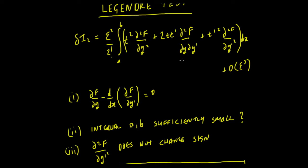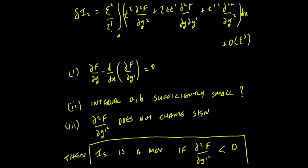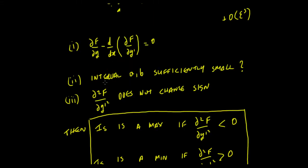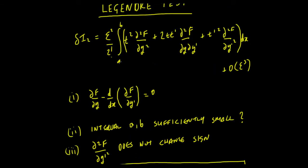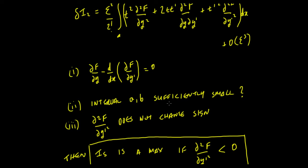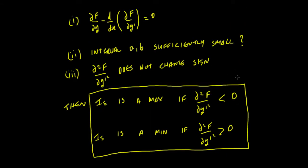We won't get a proof of that until we look at the Jacobi test and conjugate points in the next chapter. The test really has three stipulations: one, that there is a stationary point, meaning the Euler-Lagrange is satisfied; two, that the interval [a, b] for integration is sufficiently small — what we mean by sufficiently small will be clarified when we look at the Jacobi test; and three, that ∂²f/∂y'² does not change sign, remaining either positive or negative over the interval [a, b].